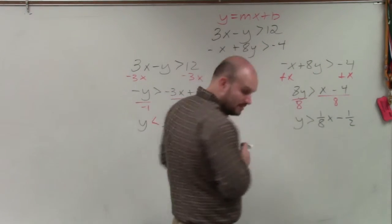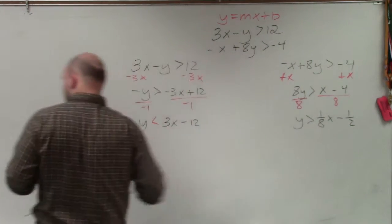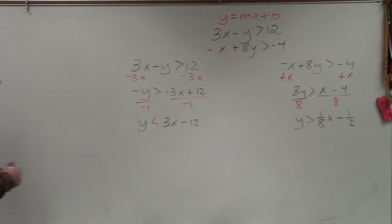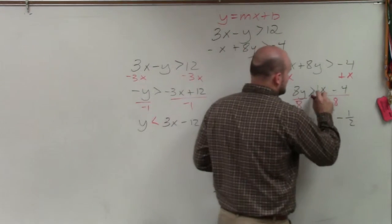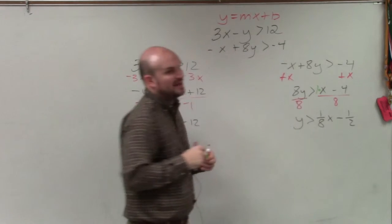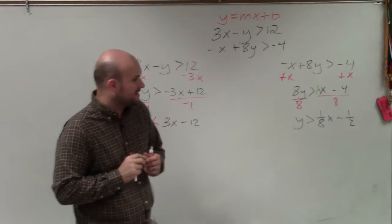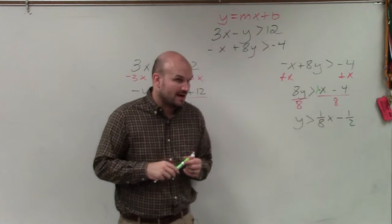And I obtain y is greater than 1 eighth x minus 1 half. Remember, ladies and gentlemen, there's a little 1 that's right there. Remember, there's a 1 that's in front of that x. So it's really 1 divided by 8 times x, which is the same thing. And negative 4 over 8 is negative 1 half.